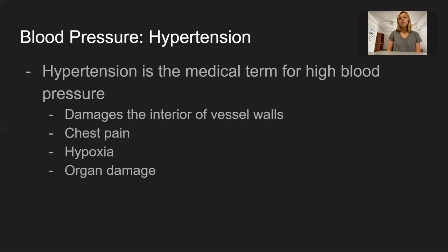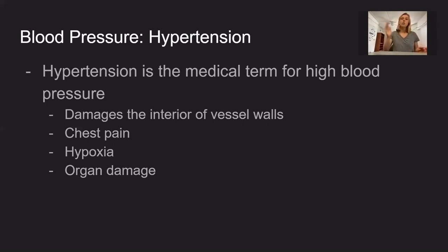Moving on to blood pressure. What I'm going to focus on a lot in this presentation is hypertension or high blood pressure, because it really does cause a lot of damage in our bodies. Normal blood pressure has a systolic of 120 over a diastolic of 80. The CDC defines high blood pressure as 140 over 90 — anything greater than that they consider hypertensive. But the American Heart Association lowers that standard and says anything over 130 over 80 is considered hypertensive. This means there's a lot more force being exerted on your vessels than needs to be.